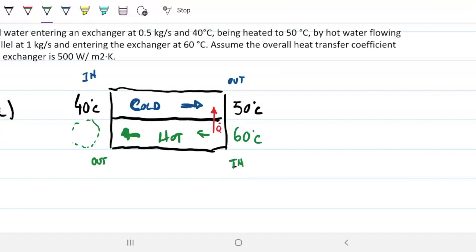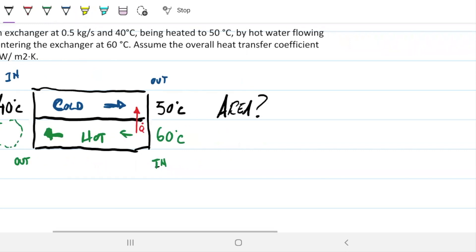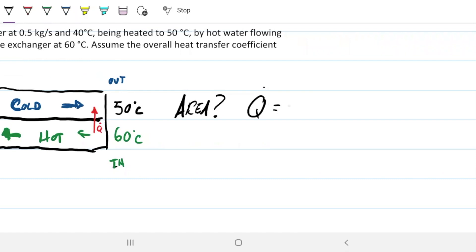What we're being asked is, what is the area? We talked about how the amount of energy will be Q = U·A·ΔT_lm·F. Note that nothing has been said about F, so we can assume it to be 1. If we want to find the surface area, all we need to do is get the heat being transferred and divide that by the overall heat transfer coefficient and the delta T log mean. We have U already, so we need to determine Q and delta T log mean to solve this question.